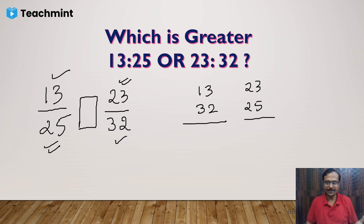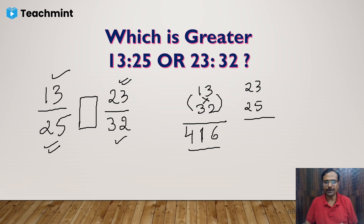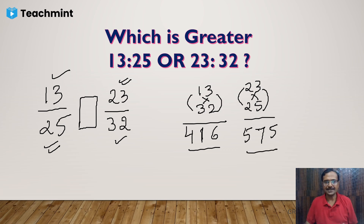Using vertical and crosswise: 3×2 = 6, then crosswise 9+2 = 11, write 1 carry 1, then 3×1 = 3 plus carry 1 = 4, so the product is 416. For the second: 5×3 = 15, write 5 carry 1; crosswise gives 10+6 = 16 plus carry 1 = 17, write 7 carry 1; then 2×2 = 4 plus 1 = 5. So the product is 575.